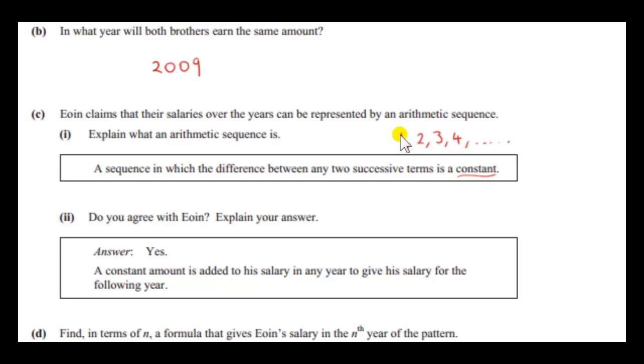For example, two minus one is one. Another pair of successive terms is three and four. Four minus three is one. We can see that the constant in this case is one. If we pick any two successive terms, we could go on to pick the successive terms nine and ten. Ten minus nine is one. Take the difference between any two successive terms and we should get the same result. So that difference is constant. It doesn't change. In this simple situation, in this particular arithmetic sequence, the constant is one.